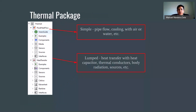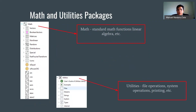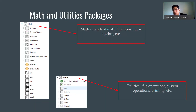The thermal package covers simple thermal modeling such as pipe flow cooling with air or water, heat transfer with heat capacitors, thermal conductors, body radiation, and sources. There's also the math utilities package which has standard math functions such as addition, subtraction, and division, as well as linear algebra, which is very useful when working with these models. Finally, there's a utilities package that deals with file operations, system operations, printing, and exporting.